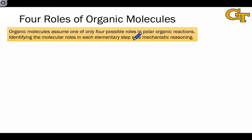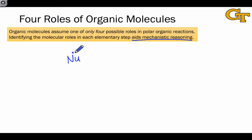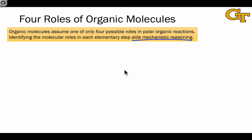Doing this before we start pushing curved arrows or drawing products based on superficial patterns we've seen before helps us by aiding in mechanistic reasoning, allowing us to be systematic about where we look for an electron source in a molecule that we expect to behave as a nucleophile. The same idea applies to looking for an electron sink.